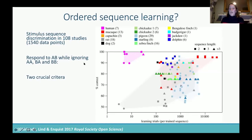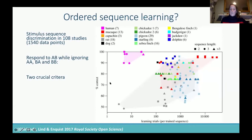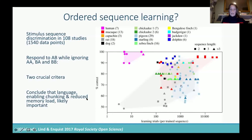Humans unsurprisingly reach ceiling pretty quickly and with very few trials. On the x-axis you've got the number of trials needed for a species to pass a certain percentage correct, whereas a lot of other species take up to thousands if not tens of thousands of trials to discriminate sequences, and it gets worse once you get above three sequences. They argue that language, which enables chunking and reduces memory load, is probably important here.